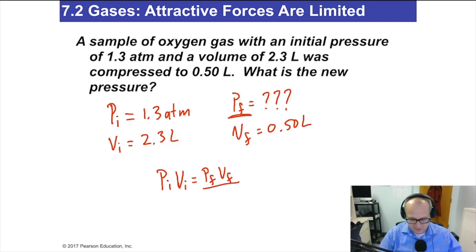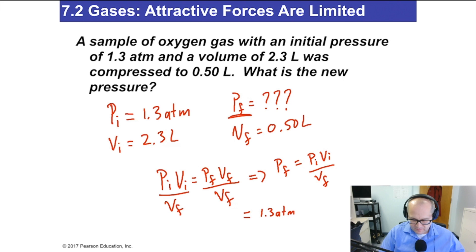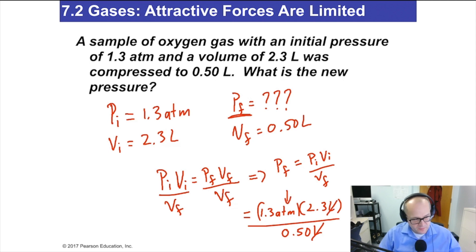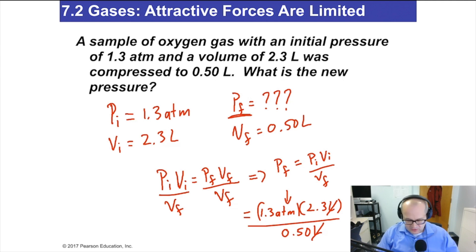Starting from PiVi = PfVf, divide both sides by Vf to get: Pf = (Pi × Vi) / Vf. Plugging in the numbers: Pf = (1.3 atm × 2.3 L) / 0.50 L. The liter units cancel, leaving units of pressure. Using a calculator: 1.3 × 2.3 ÷ 0.5 gives a final pressure of 5.98 atmospheres.